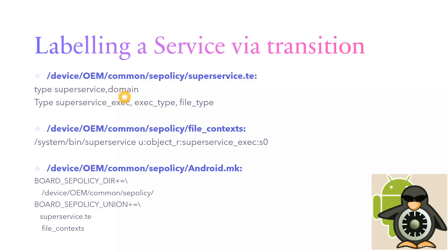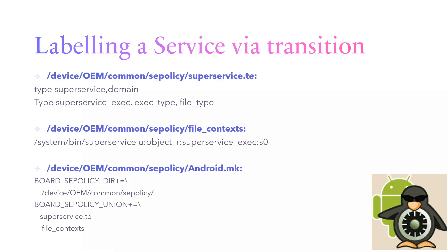I've defined a super_service.te file. The super service will run in a unique domain called super_service. When we run as a domain we will have lots of privileges. Two things I'm using here are exec and type — I'm defining my super_service to run in the exec type itself, and I'm also defining my file type. To access this super_service, you must have super_service_exec privileges.